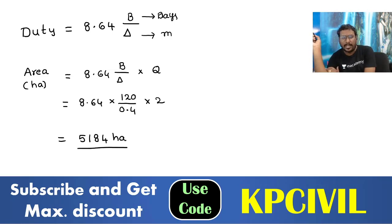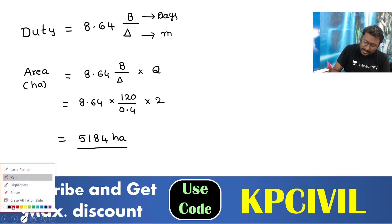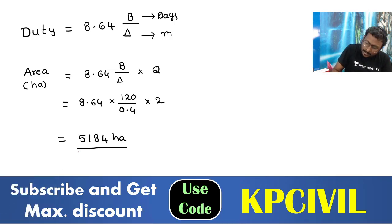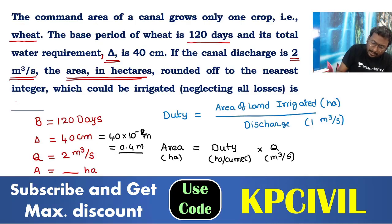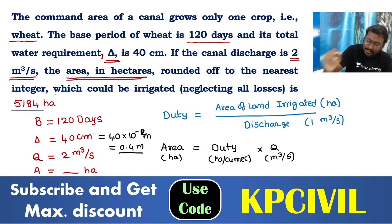The answer is 5184 hectares. This is the area to be irrigated.